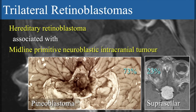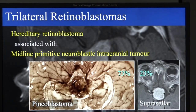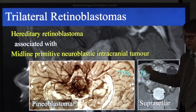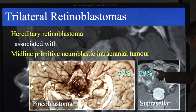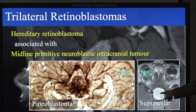It's a retinoblastoma that can be bilateral, unilateral, or in very rare cases no retinal tumours at all, combined with a midline primitive neuroectodermal tumour in the intracranial space. About three quarters of them are in the pineal glands, and one quarter is in the suprasellar location, close to the optic chiasm.